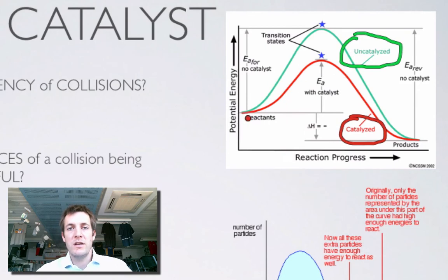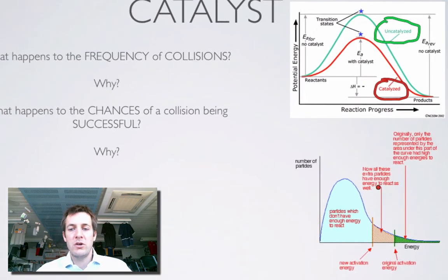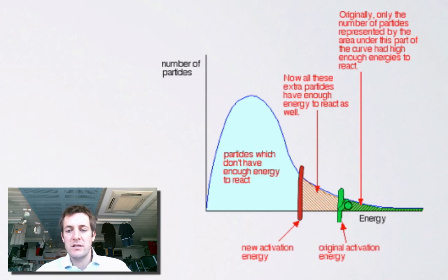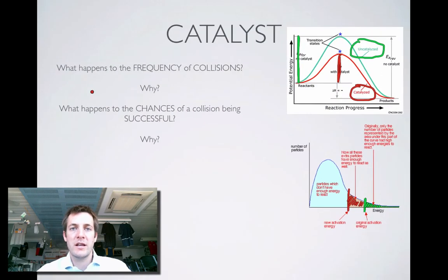It's going to be easier to get over the hill if you've got a catalyst. On the energy distribution diagram we can mark two activation energies: the red one — smaller, for the catalyzed pathway — and the green one — larger, for the uncatalyzed pathway. Without a catalyst, only a certain proportion of particles have enough energy to react. As soon as we add a catalyst, the proportion of particles with enough energy to react increases.